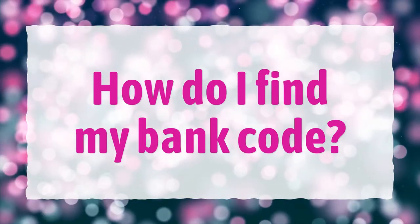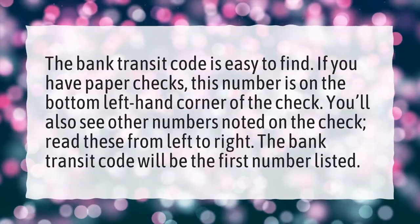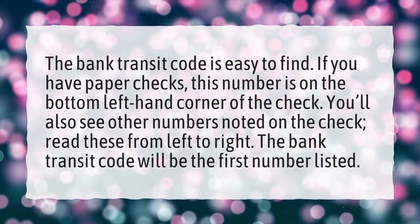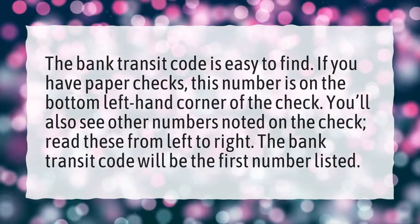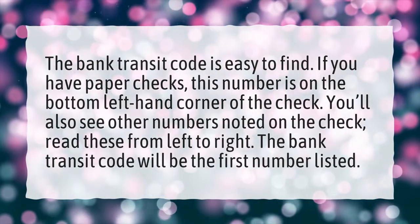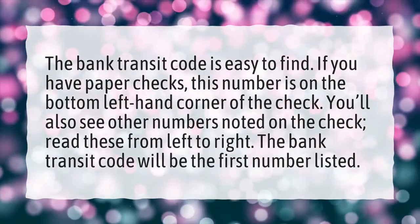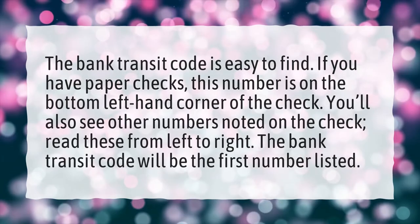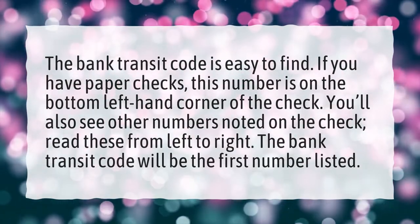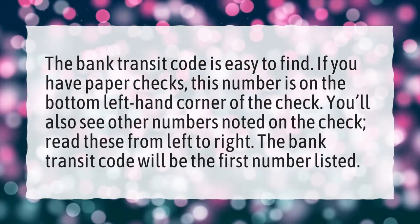How do I find my bank code? The bank transit code is easy to find. If you have paper checks, this number is on the bottom left-hand corner of the check. You'll also see other numbers noted on the check. Read these from left to right — the bank transit code will be the first number listed.